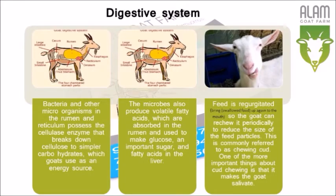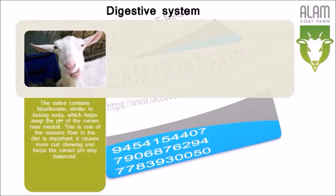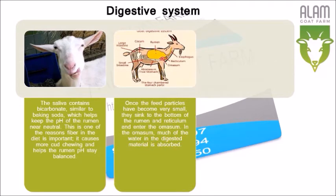Feed is regurgitated — bringing swallowed food back up to the mouth — so the goat can re-chew it periodically to reduce the size of the feed particles. This is commonly referred to as chewing cud. One of the more important things about cud chewing is that it makes the goat salivate. The saliva contains bicarbonate, similar to baking soda, which helps keep the pH of the Rumen near neutral. This is one of the reasons fiber in the diet is important — it causes more cud chewing and helps the Rumen pH stay balanced.